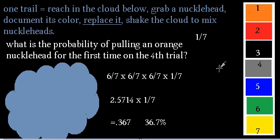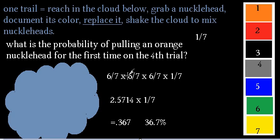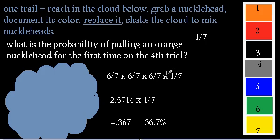Now to review: this problem is with replacement — you pull it out, put it back in, pull it out, put it back in. That's why it stays six-sevenths each time. We call not getting orange a failure, and we want success on the fourth trial for the first time, meaning you fail, fail, fail, then succeed.